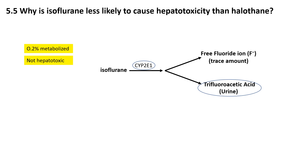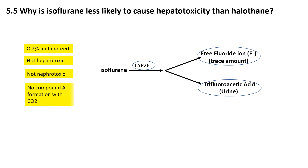During oxidation, a small amount of fluoride ions is released, but due to the low metabolic rate of isoflurane, these fluoride levels remain well below nephrotoxic concentrations. Also, isoflurane is much more chemically stable than sevoflurane. While sevoflurane is more prone to forming compounds due to its structure, isoflurane does not easily break down into such reactive intermediates.